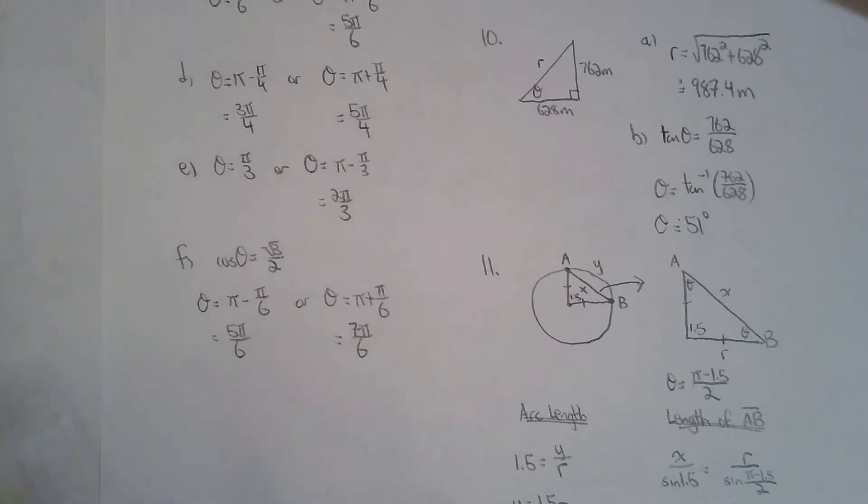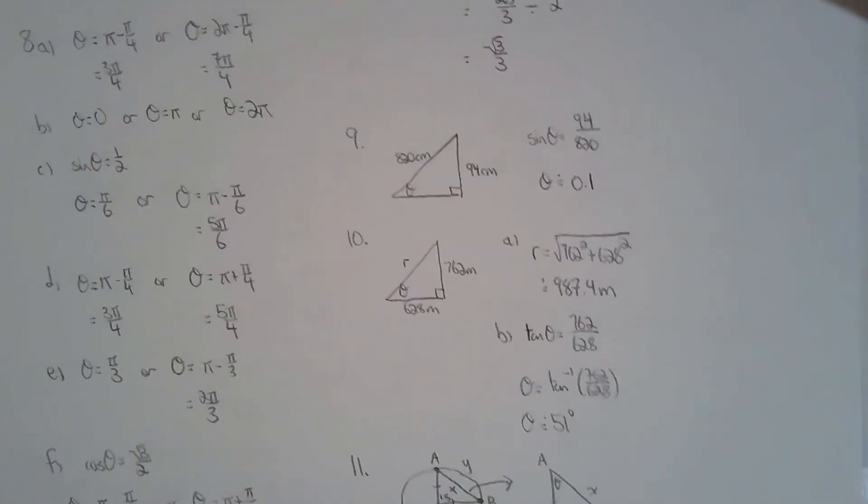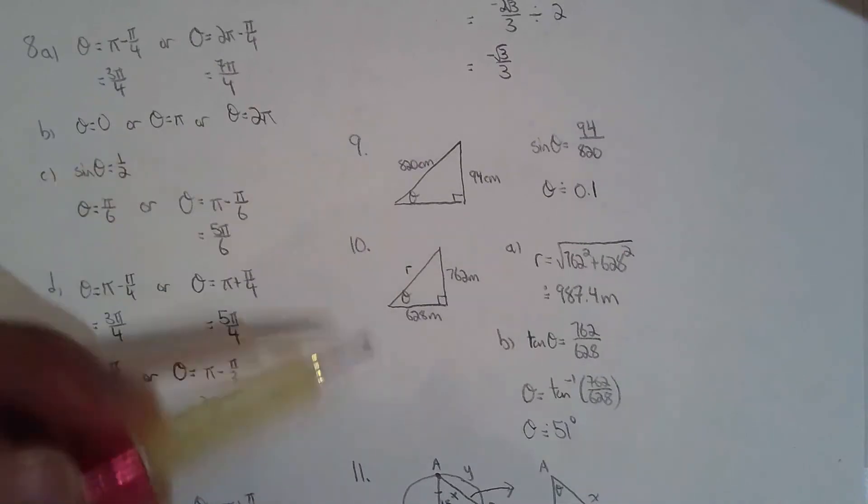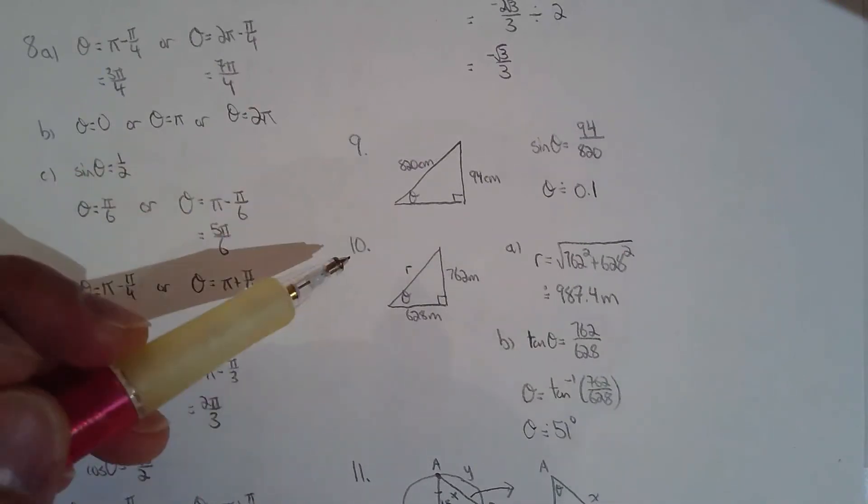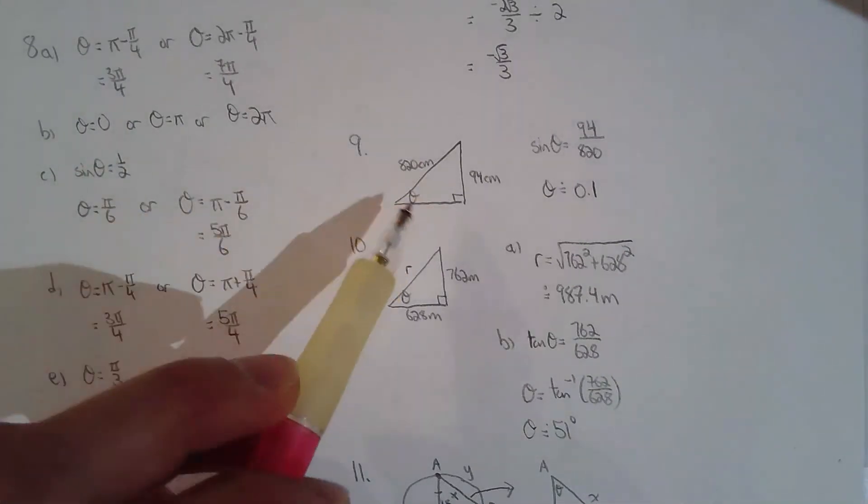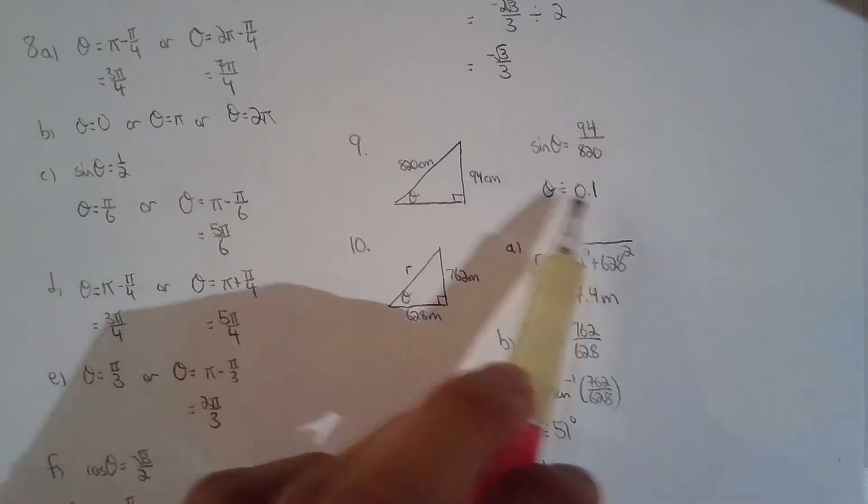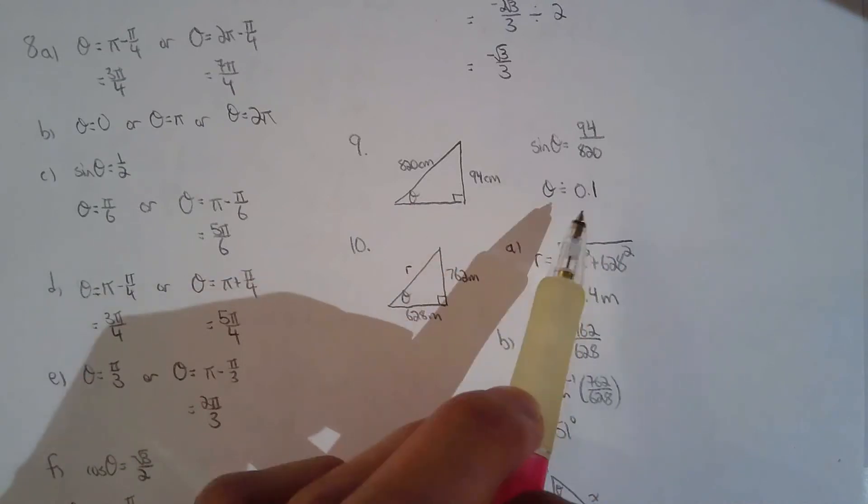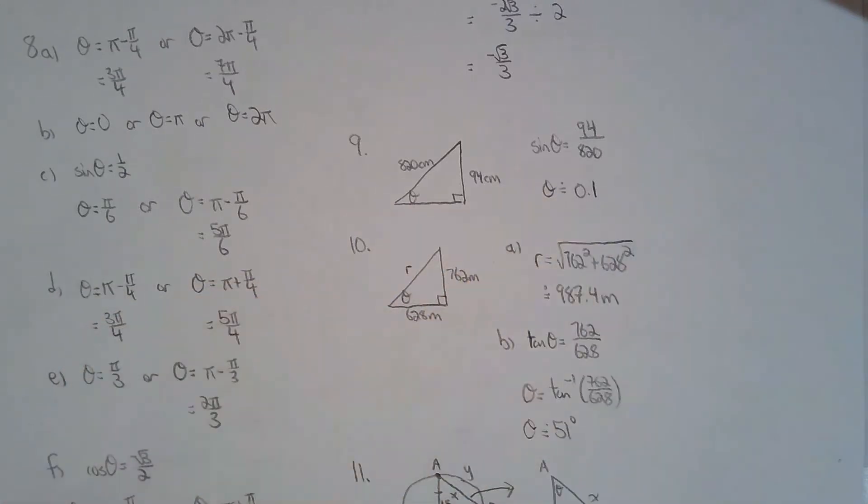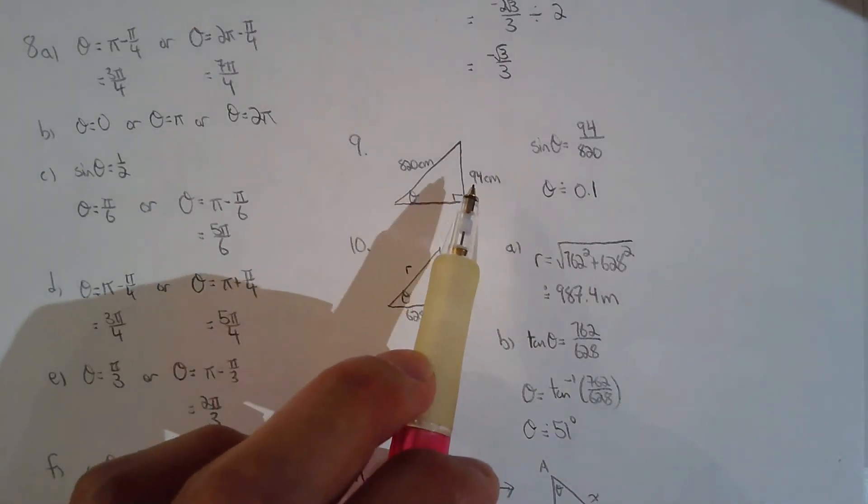Number nine and ten are really grade ten trig. So nine I believe we're solving for the angle of inclination, solving for this angle. So I expressed the angle in radians. They didn't tell me if they want in radians or degrees, so since this is a grade 12 course I'm gonna express it in radians. I chose a sine ratio by the way, opposite and hypotenuse.